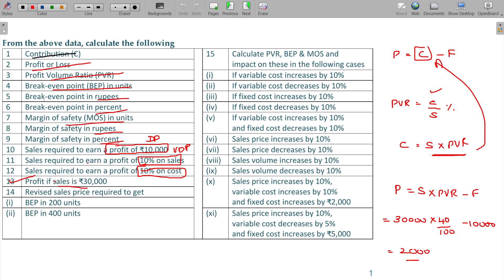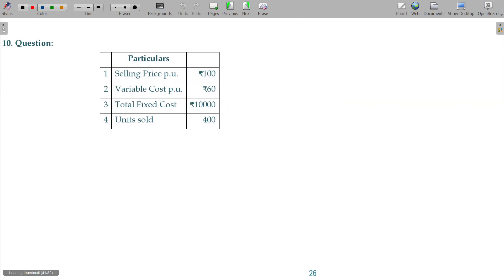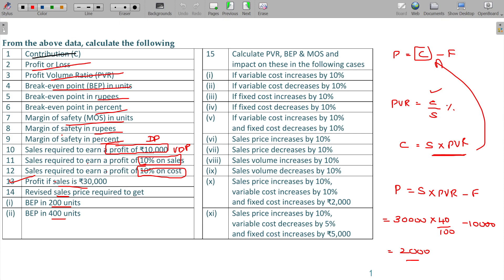Let us go for the calculation of revised sales price required to get BEP in 200 units or BEP in 400 units.